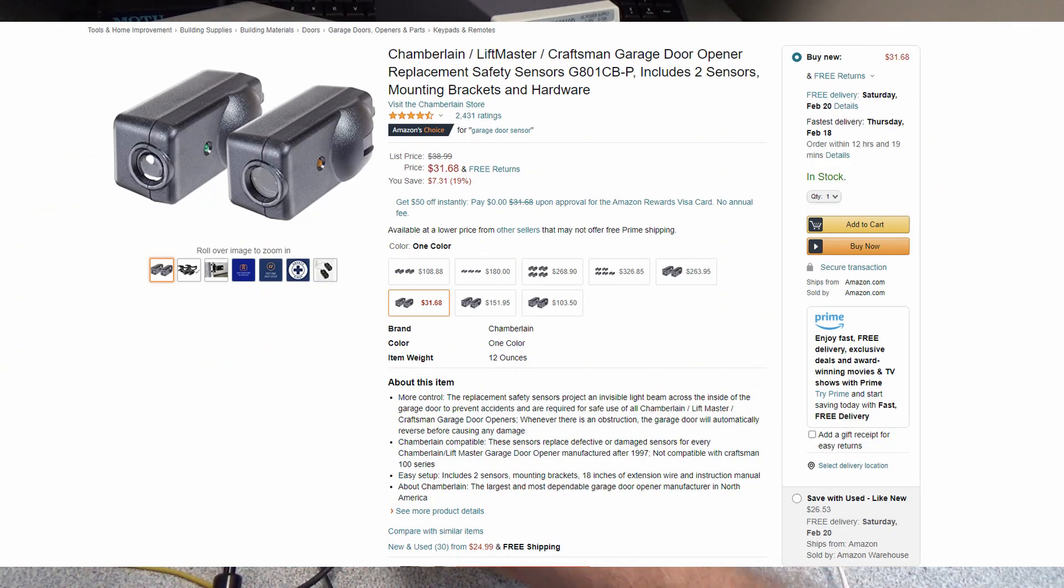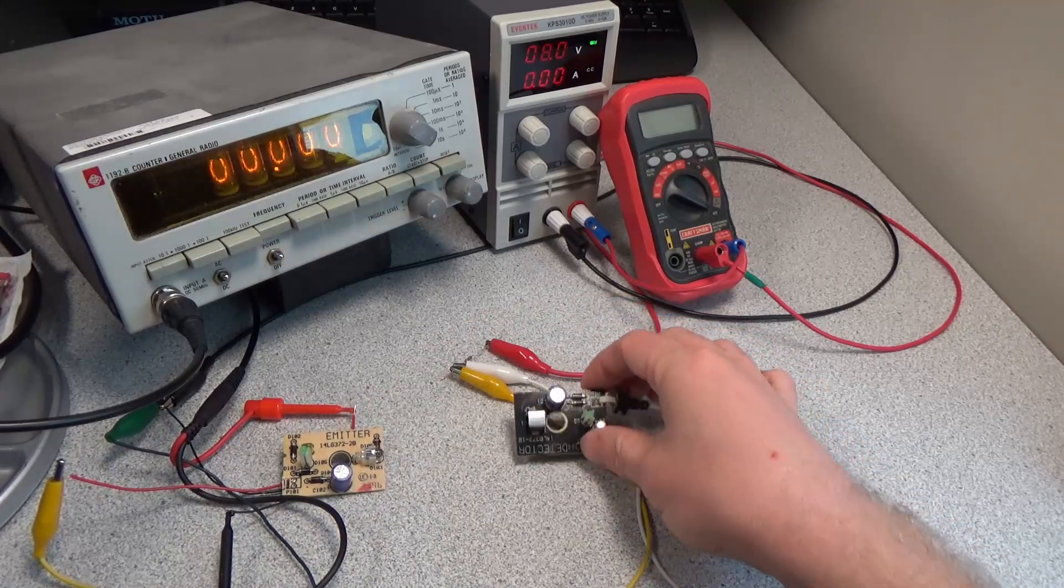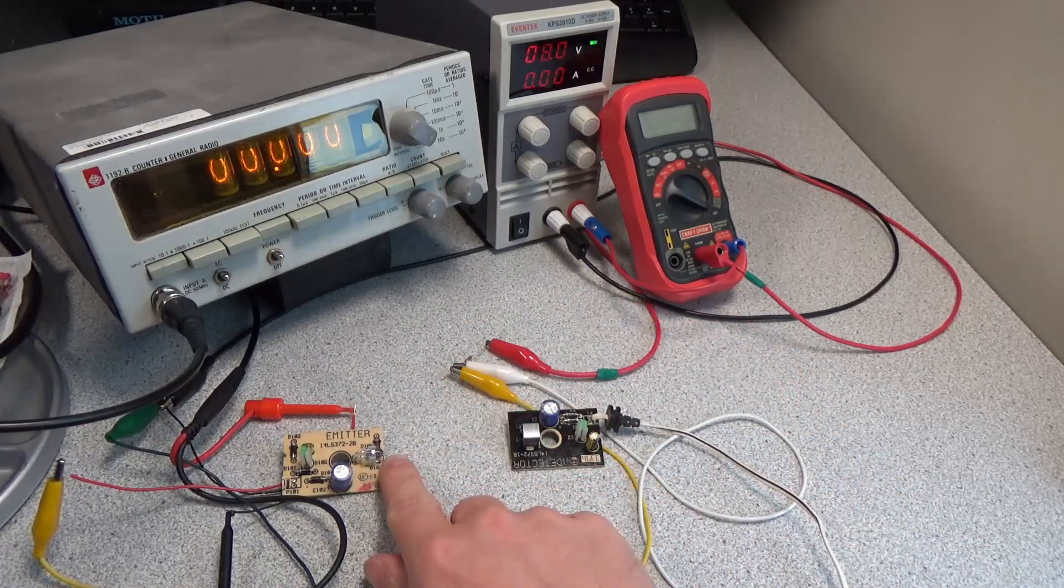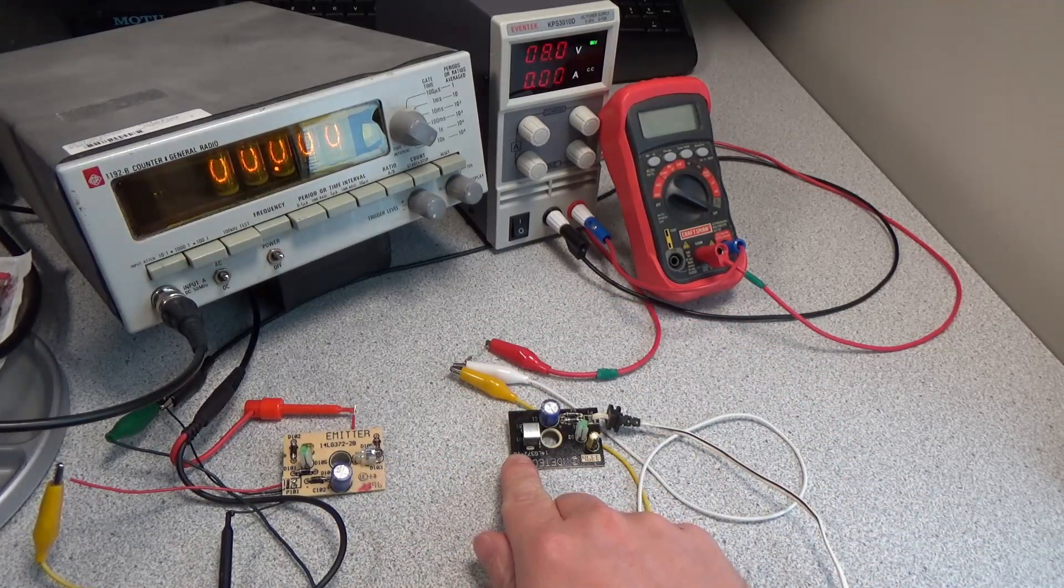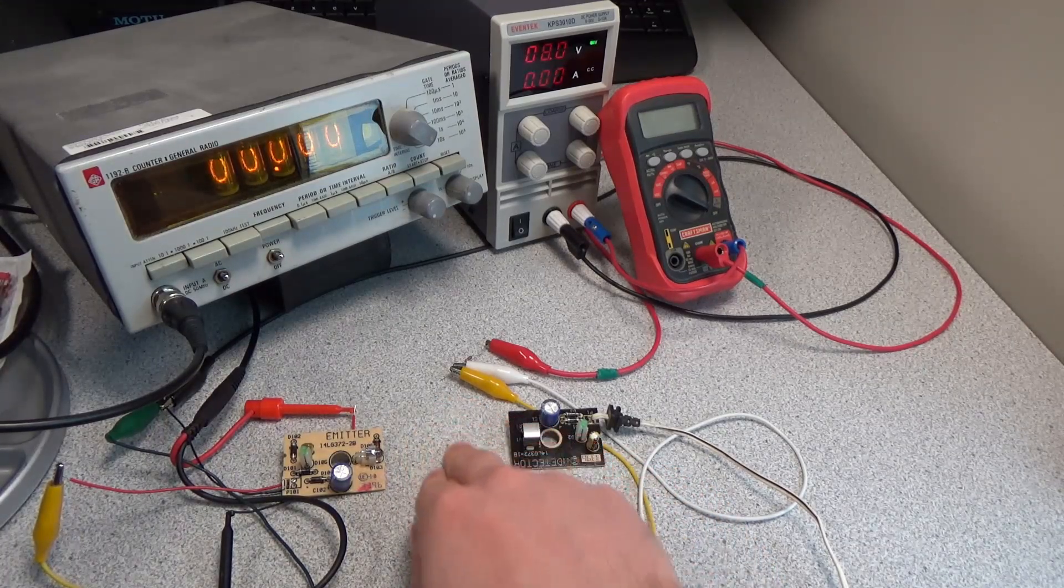What these are is the little boxes you see down near the floor on your garage door opener. I'll put some photos in here. One of these is an emitter, as it says on the board right here, and one is a detector. This sends a signal out across, so when somebody walks through as the door's trying to close, it won't let the door close.